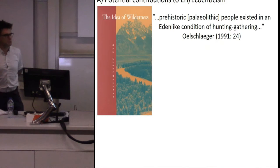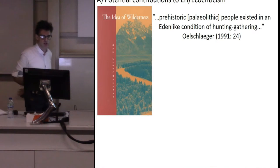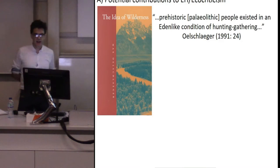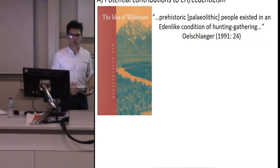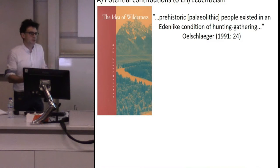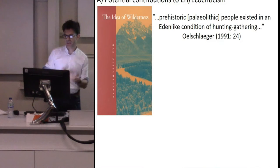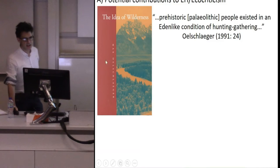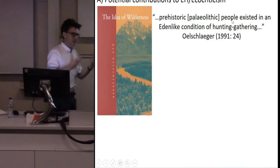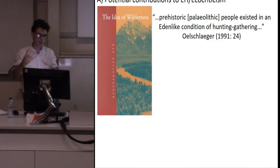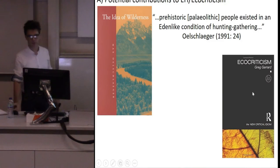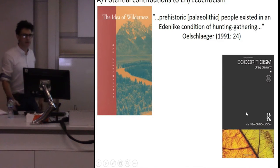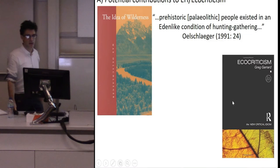An important foundational book within ecocriticism is Max Oelschlaeger's The Idea of Wilderness, published in 1991. It critiques the idea of wilderness and how ideas of the wild have changed through time, but it has what we'd now consider a naive view of the Mesolithic-Neolithic transition — the idea that prehistoric people existed in an Eden-like condition of hunter-gathering prior to the Neolithic. Some of these ideas from Oelschlaeger make their way into books like Greg Garrard's ecocriticism introduction.